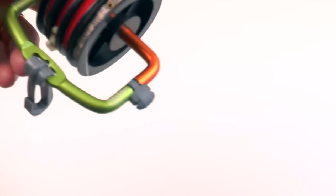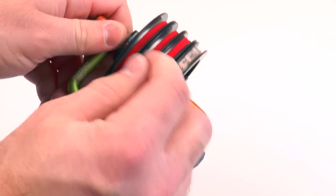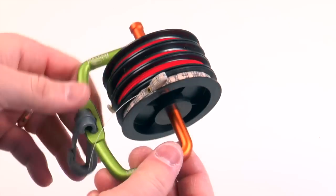Then pull, and your tippet is cut. You don't even have to get out your nippers, you just wrap it around and it is split.